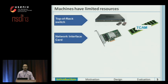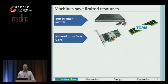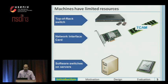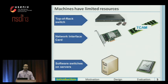The rule capacity of switches and network interface cards is limited by the power-hungry TCAM memory. Software switches also use CPU. CPU is a valuable resource that can be used by end users and make money, so operators may set a CPU budget for the software switches.